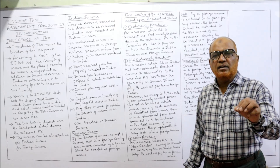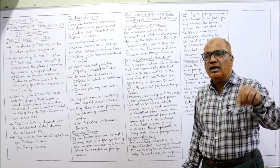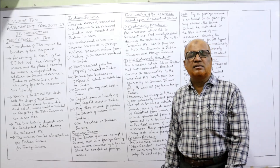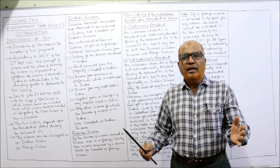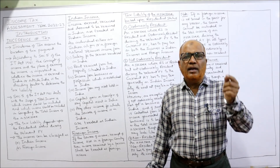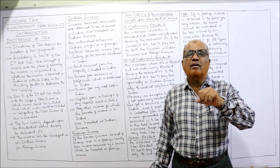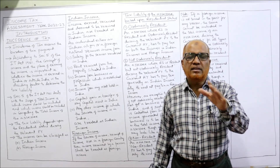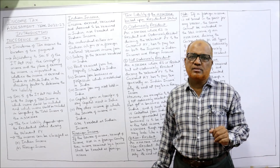Income which is earned, received, or deemed to be received in India is treated as Indian income. Three words to remember: income which is earned in India, income which is received in India, and income which is deemed to be received in India — these incomes are called Indian incomes.